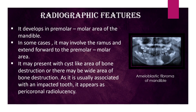Radiographic features: it develops in the premolar-molar area of the mandible. In some cases, it may involve the ramus and extend forward to the premolar-molar area. It may present with a cyst-like area of bone destruction or there may be a wide area of bone destruction. As it is usually associated with an impacted tooth, it appears as a pericoronal radiolucency.